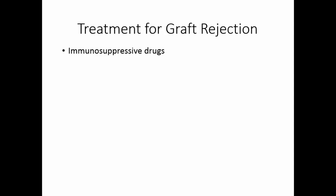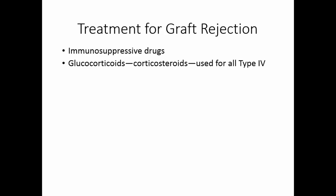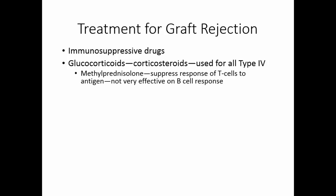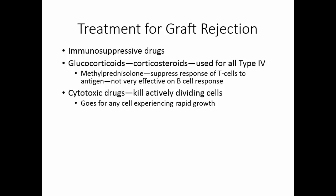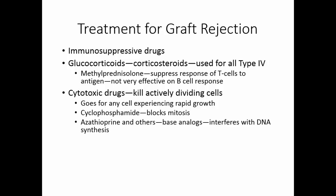The treatment for graft rejection includes using immunosuppressive drugs. One approach is to use glucocorticoids or corticosteroids, which suppress the immune response in general and can be used for all type 4 kinds of reactions. Methylprednisolone suppresses the response of T cells to the antigen, but it's pretty specific for T cells and not very effective on any kind of B cell response. Cytotoxic drugs kill actively dividing cells. Cyclophosphamide blocks mitosis. Azathioprine and others act as base analogs, so they interfere with DNA synthesis.